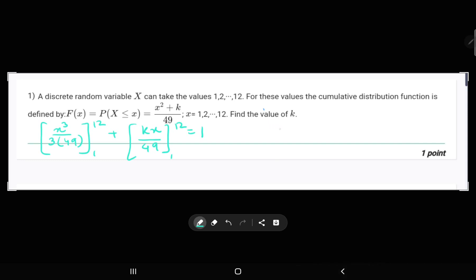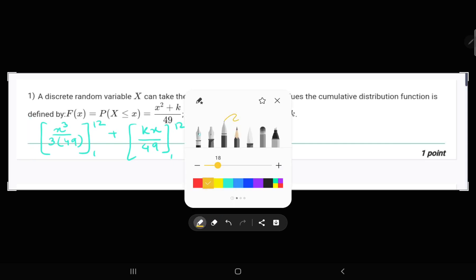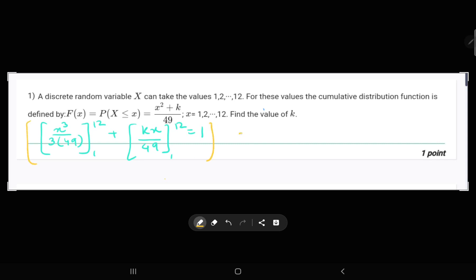Solving this, we will get, putting the values: 12³/(3 × 49) minus 1³/(3 × 49) plus 12k/49 minus k/49 equals 1.